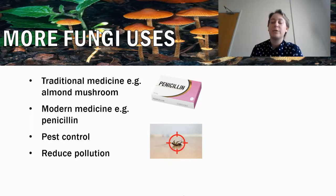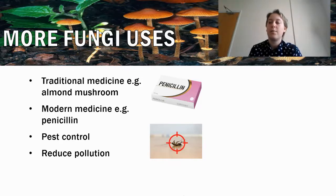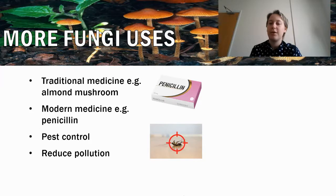We also see fungi in modern medicine, such as penicillin, which you might have heard of. This was actually discovered as a bread mould — it grows when bread goes mouldy, and that specific species of mould produces penicillin. It's used to treat a range of bacterial infections, including pneumonia, meningitis, and ear infections. They are always bacterial infections.